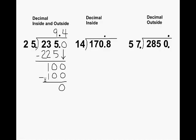So we are done with this problem and the answer is 9 and 4 tenths. Going to the next example, we know that we can fit one group of 14 inside 17. That gives us a product of 14. The difference of 17 and 14 is 3 and then we bring down our next digit which is a zero. We can fit two groups of 14 inside 30, giving us a product of 28.